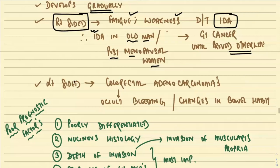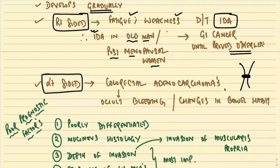Left-sided colorectal carcinoma causes constriction, leading to obstruction. They may present with occult bleeding and changes in bowel habit, or present with obstruction as well.